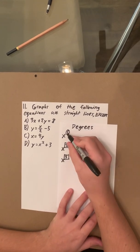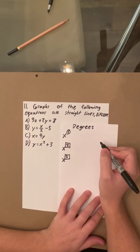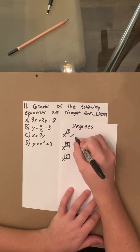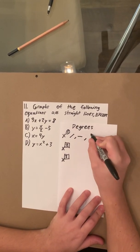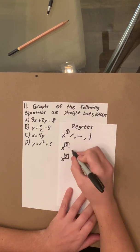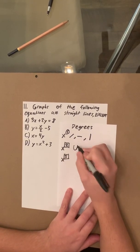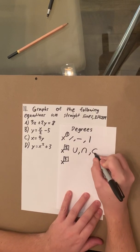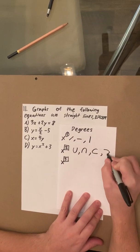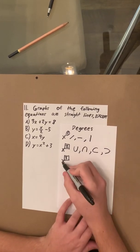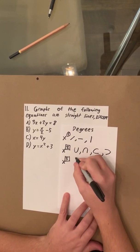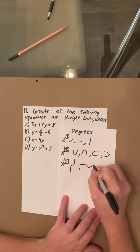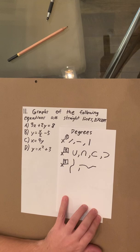What this means is the degree changes how the graph is going to look. If it has a degree of 1, it's going to be a straight line. If it has a degree of 2, the graph will curve into a shape called a parabola. And if it has a degree of 3, it's going to have a different kind of curve — those don't really have a name for them.